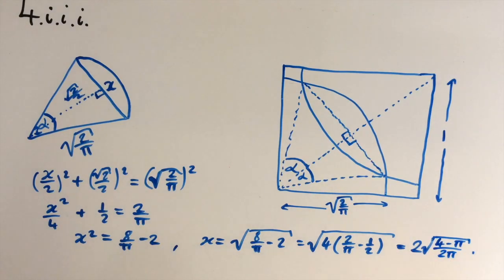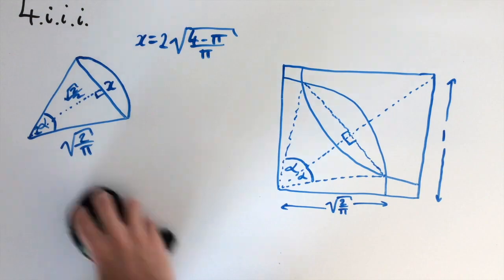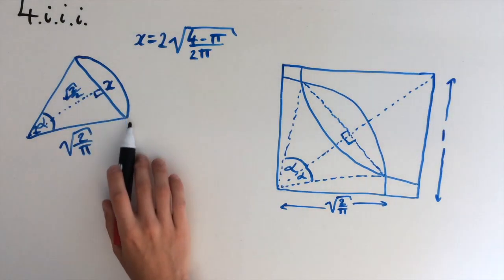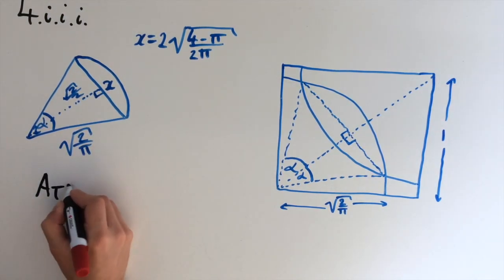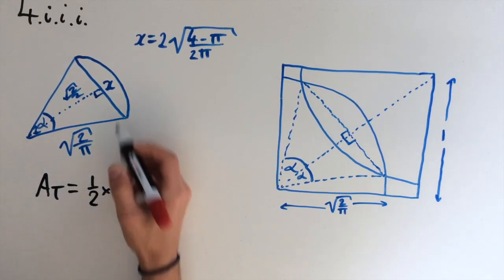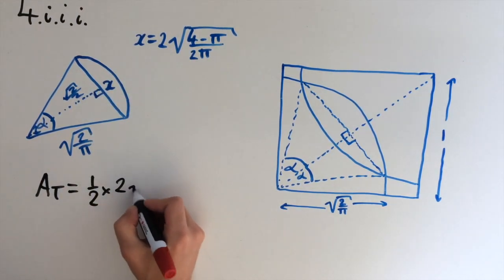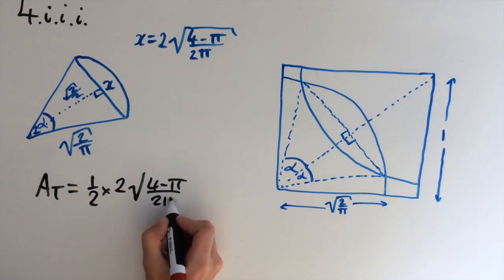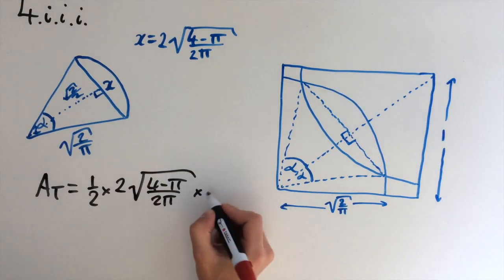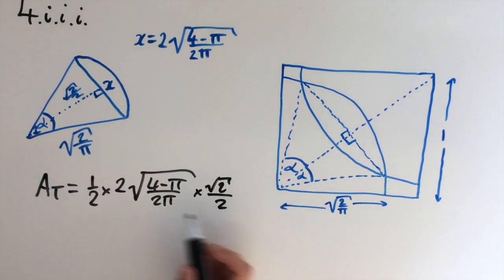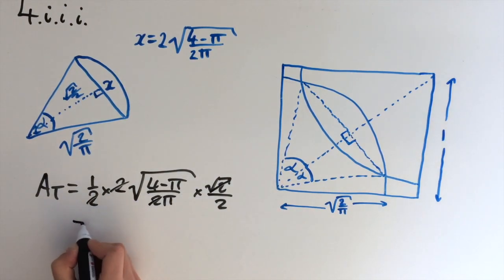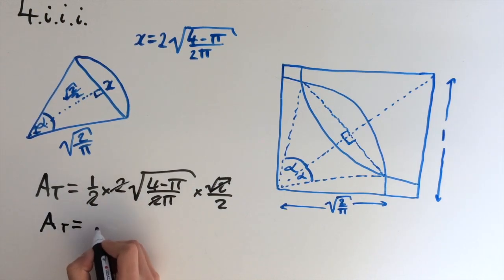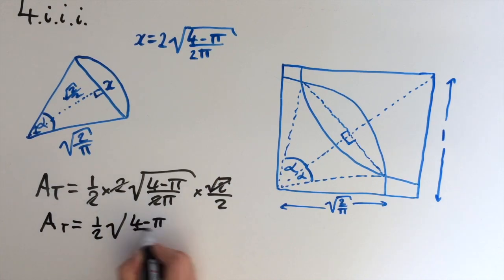Now I'll work out the area of the triangle. Area of triangle equals one half times base times height. The base is x = 2√((4−π)/(2π)) and the height is √2/2. The half and the 2 cancel, and the 2 inside the square root and the square root of 2 also cancel, leaving the area of the triangle equal to one half times the square root of (4 − π)/π.